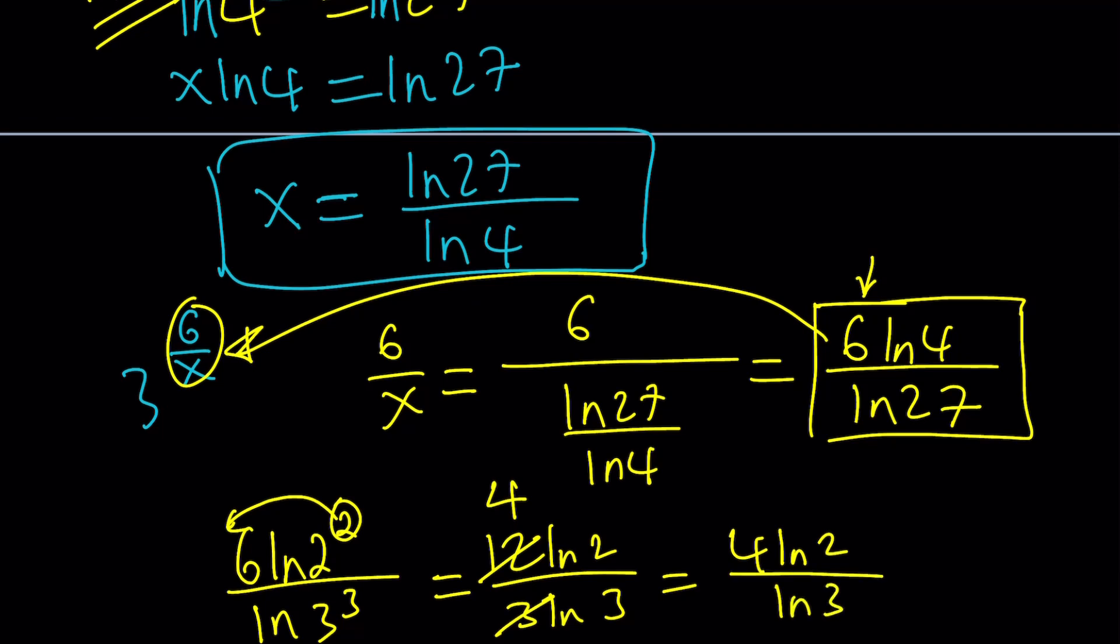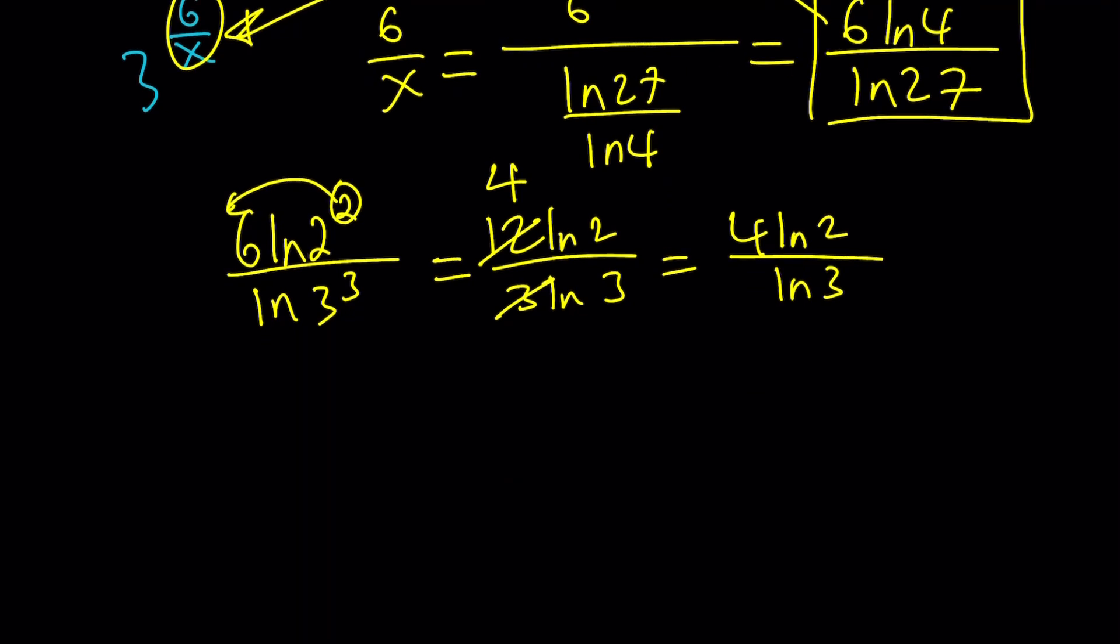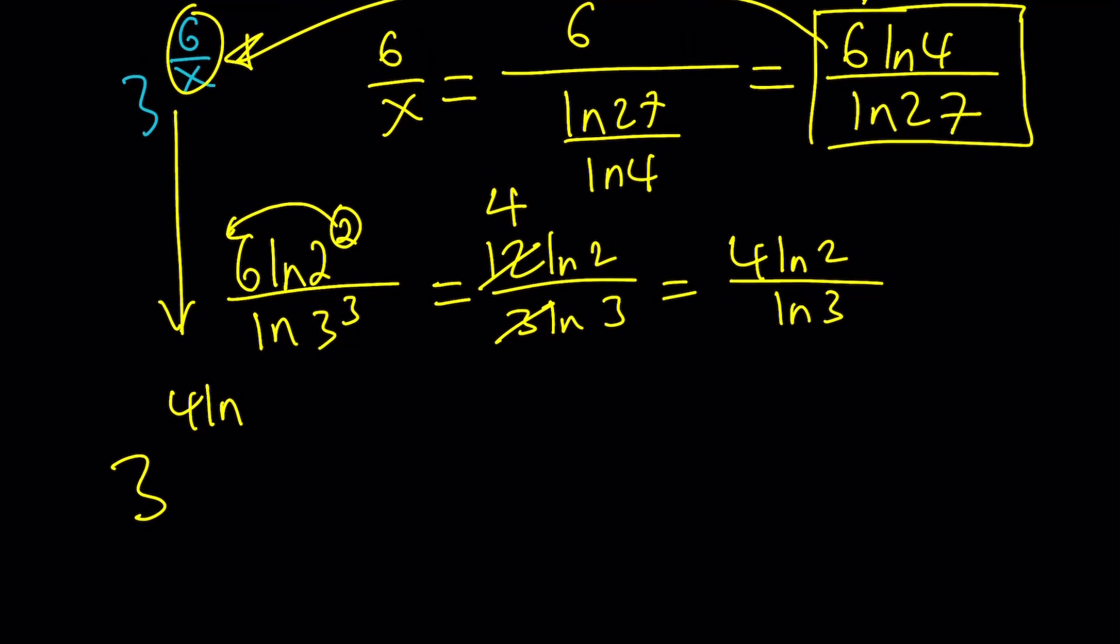Now this is kind of helpful. How do we plug it in and evaluate the expression? We have 3 to the power of 6 over x. We have 3 to the power of 4 ln 2 over ln 3.